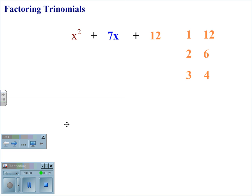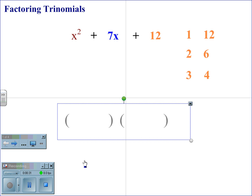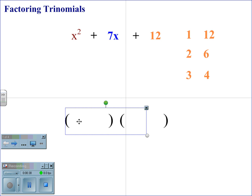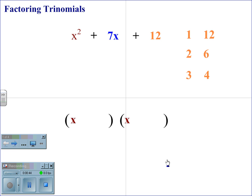Now we'll begin by creating a parenthesis set for each factor that we will use. x squared factors out to x times x, so we place an x at the beginning of each parenthesis. Next we're going to determine our signs.